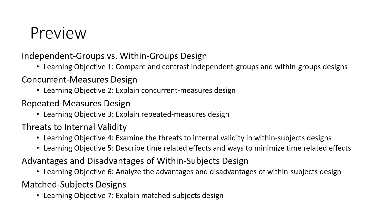The learning objectives include looking at what within group design is, comparing and contrasting independent groups with within group designs, explaining concurrent measures designs, repeated measures designs, then looking at internal validity — examining the threats to internal validity within subjects designs as well as describing the time-related effects and ways to minimize them, since those are the things that challenge internal validity. Then we'll look at the advantages and disadvantages of within subjects design.